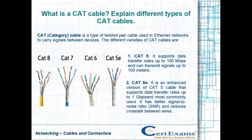In this video, we will learn what a CAT cable is and explain different types of CAT cables. CAT, or category, cable is a type of twisted pair cable used in Ethernet networks to carry signals between devices.